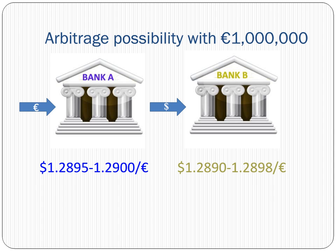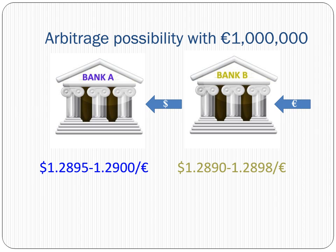If we start with euros instead of dollars, we can again choose to go to Bank A first, this time to sell euros and buy dollars, then sell dollars to Bank B and buy euros back. As an alternative, we can first choose to go to Bank B to sell euros and buy dollars, and our next step would then be to sell dollars to Bank A and buy euros.